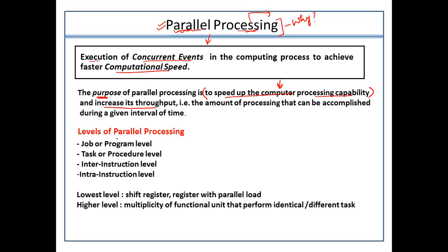Now, what are the various levels where we can implement parallel processing? You can achieve parallel processing at the program level when a number of programs are running on a concurrent or parallel basis. For example, programs P1, P2, and P3 are different jobs; when your system is executing such jobs on a parallel basis, it has achieved parallel processing. You can also do multiple tasks at the same point of time, and that is another example of achieving parallel processing.